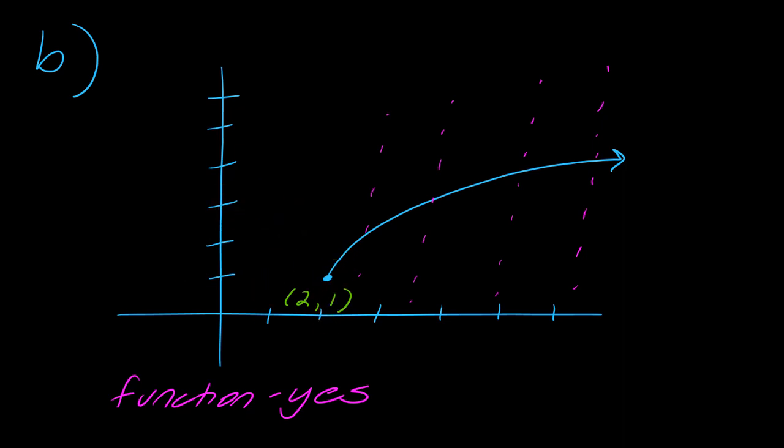So what that means then is, let's see, where do I want to put this? I'll put d here for domain. So my x values start here at the value 2, and they just keep going this way for forever. So in interval notation, it's 2 to infinity. 2 gets a square bracket to indicate that the 2 is included.